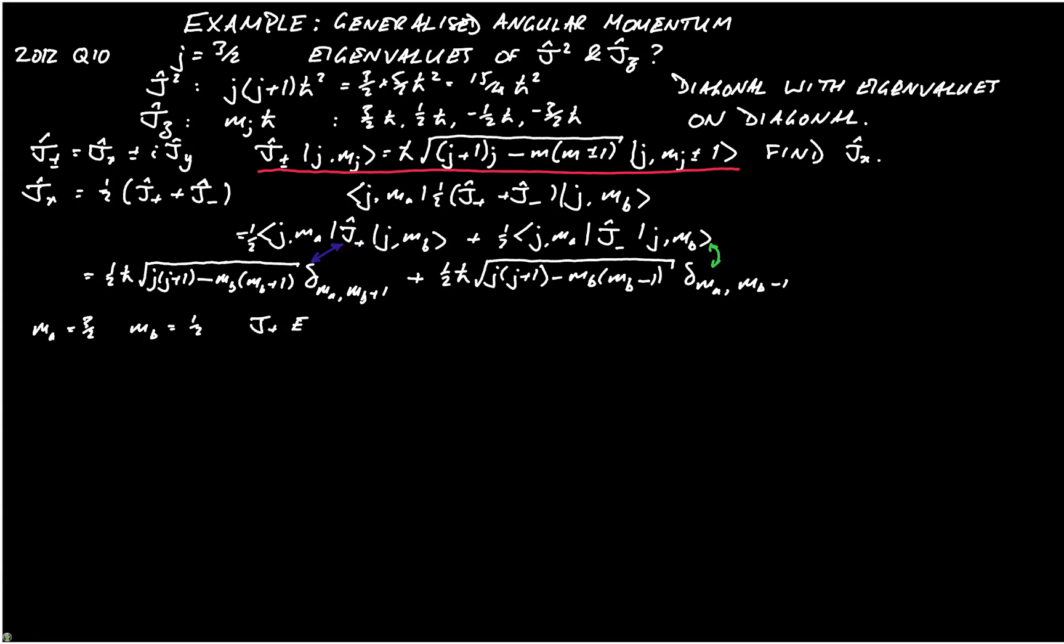So the j plus entry. And if you work it through, you find that j, j plus 1 is always 15 over 4. And in this case, m b, m b plus 1 gives you 3 over 4. And so we end up with a square root of 3 h bar.